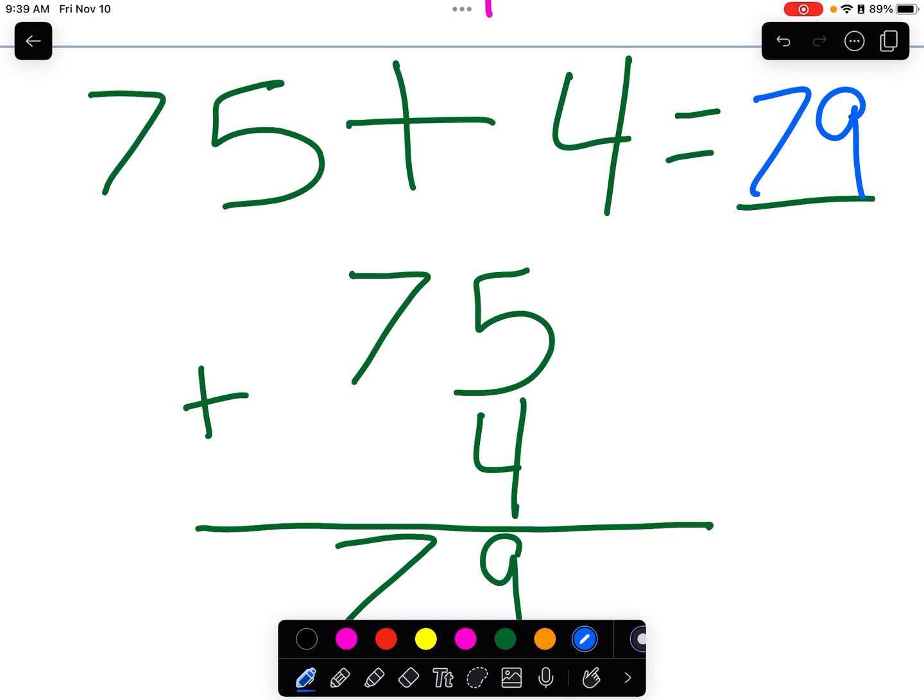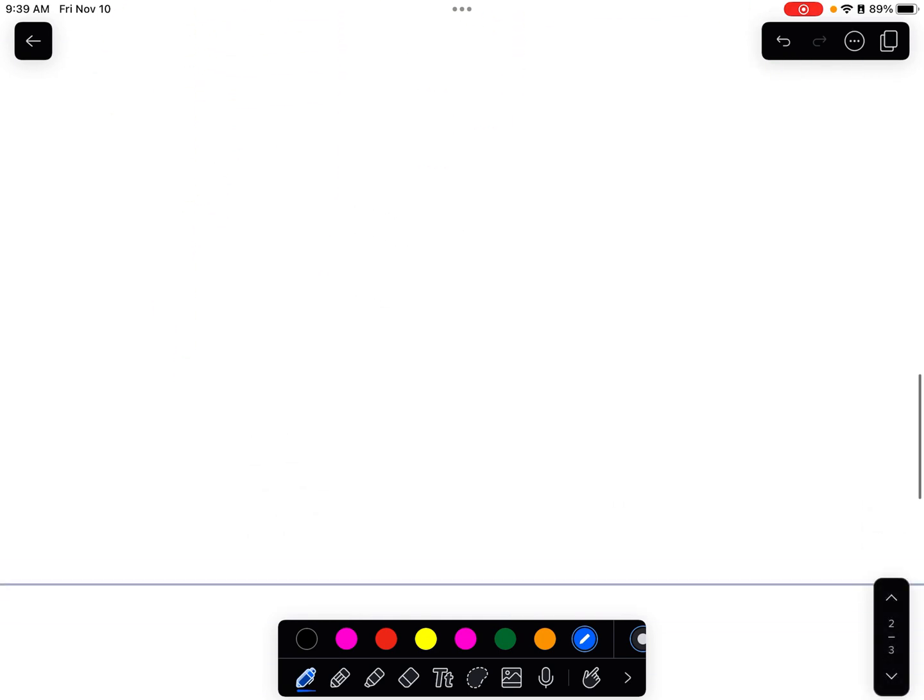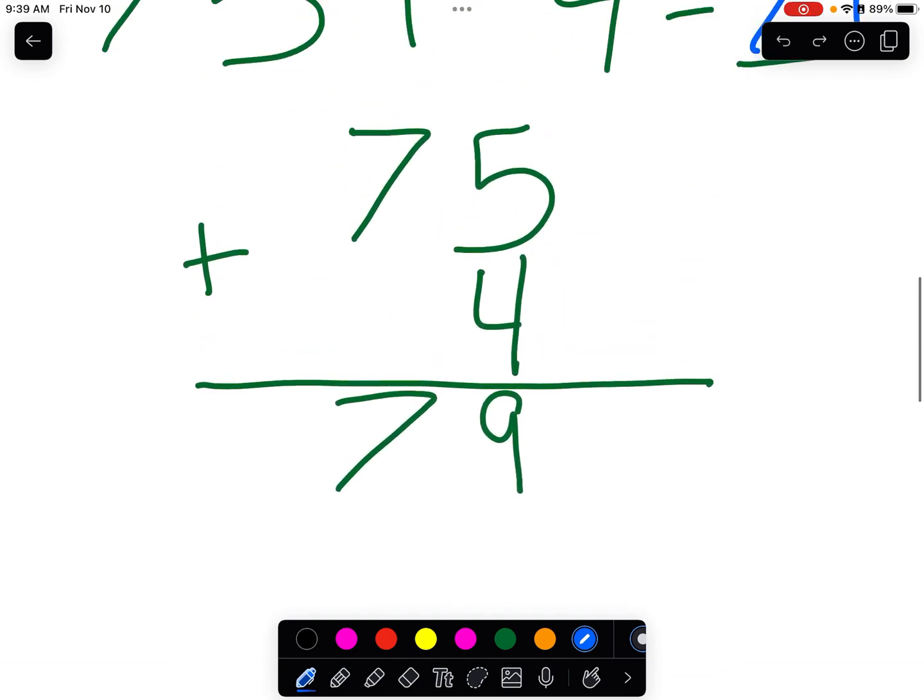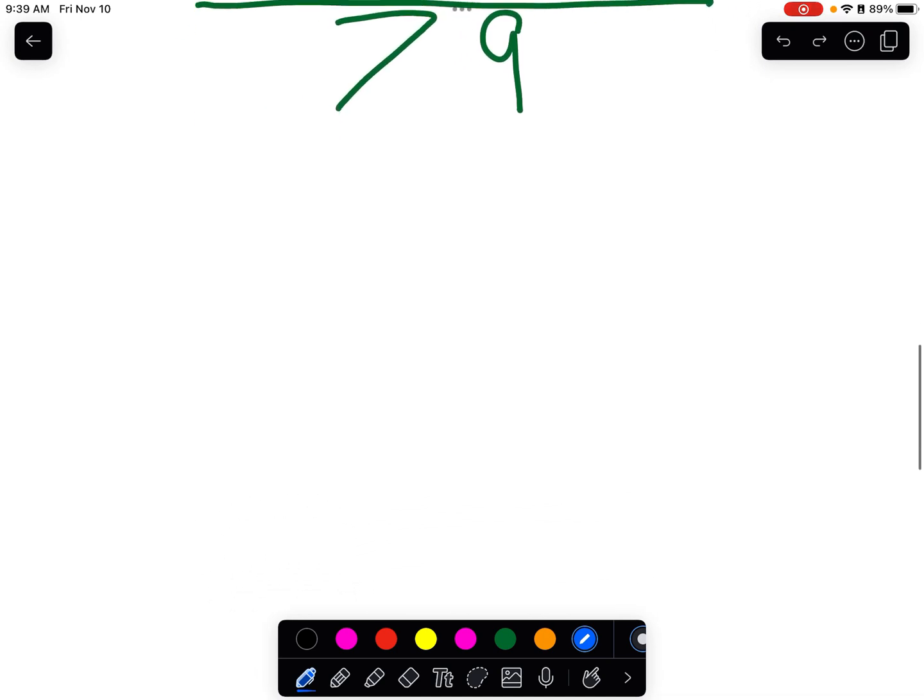Okay, now I know what some of you might be thinking. What if I have a number like this? What if I have 36 plus seven? Now, this particular problem involves something called regrouping or carrying. And we're not going to get into it quite yet. That's for next week. We're going to just stick with no regrouping right now and get some practice with that.